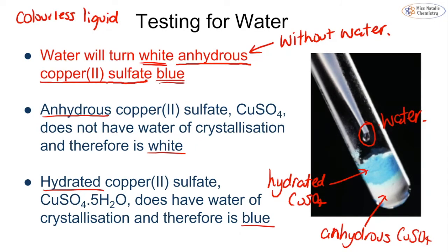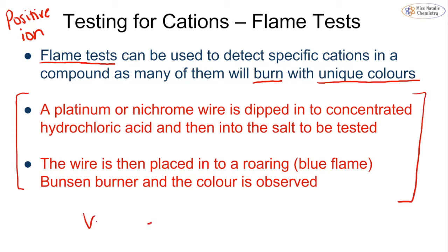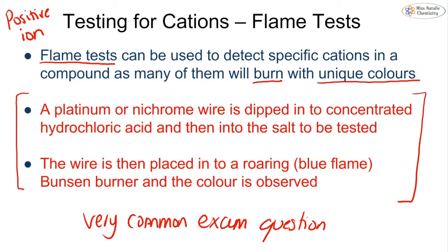To test for a specific cation, a positive ion, we carry out a flame test. Many cations in a compound burn with a very unique colour, so when we burn copper, iron, lithium, or calcium they each give a specific colour, and based on that colour we can determine which cation is present. How to carry out a flame test is a very common exam question, usually worth two or three marks.